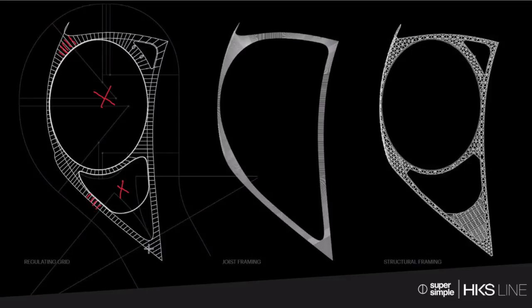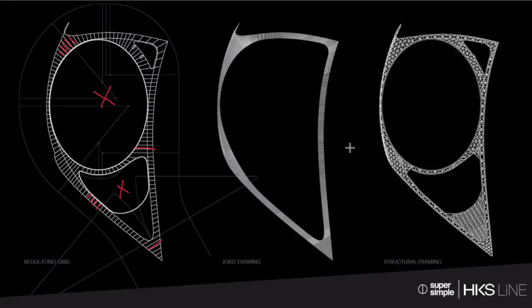Once we get our primary structural system set, the next step is to bring in the joist framing and understand how that works layered upon the primary structural system. The far right image shows the tertiary structural framing that will actually carry the panels and their loads. As you can imagine, juggling efficiency with steel tonnage, seismic considerations, schedule, and cost is a balancing act — managing the number of individual pieces being erected, their size, spans, and fabrication time. There are many balls in the air between the structural team, the fabricator, and the design team.